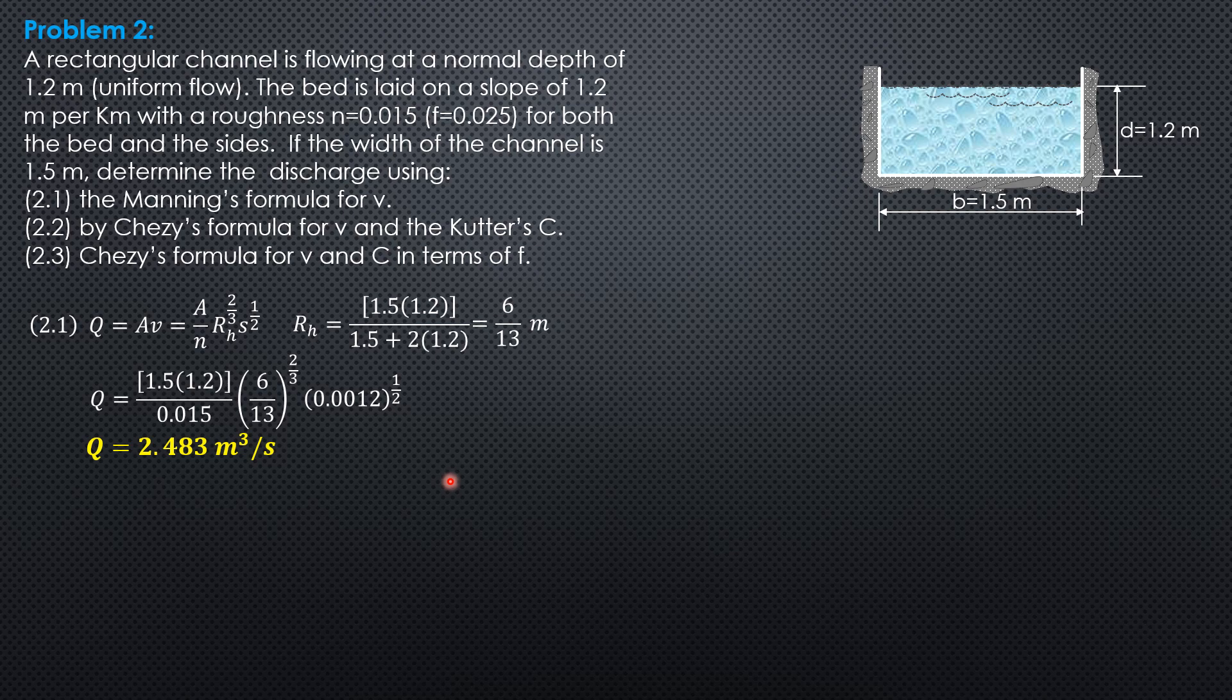By Kutter's formula and Chezy C, let's solve for C first. C is area times V, and V is C square root of hydraulic radius times slope, so that you can easily recall it as CARS.